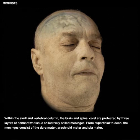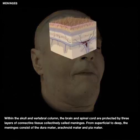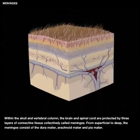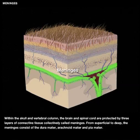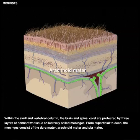Within the skull and vertebral column, the brain and spinal cord are protected by three layers of connective tissue, collectively called meninges. From superficial to deep, the meninges consist of the dura mater, arachnoid mater, and pia mater.